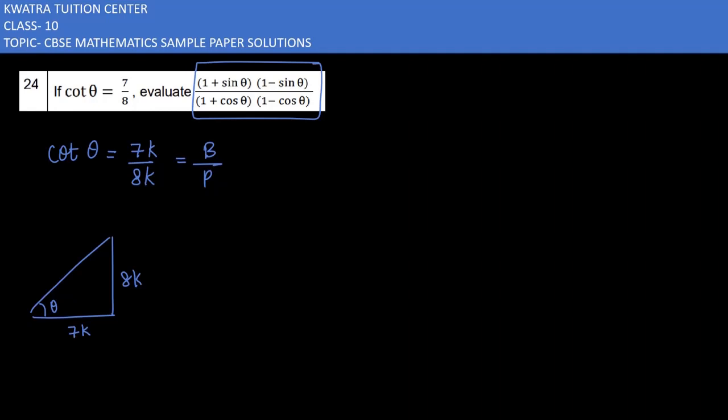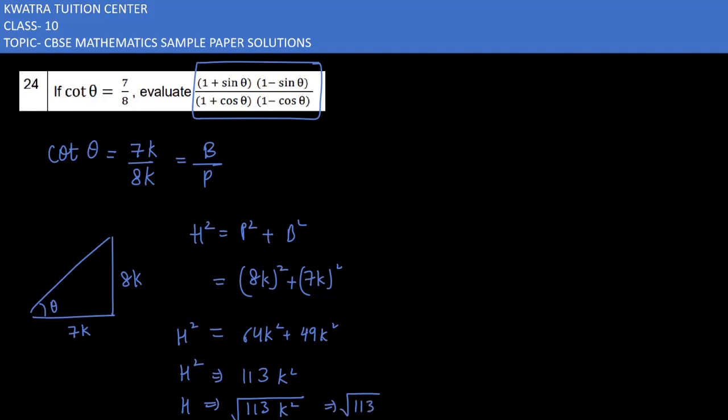Find the value of hypotenuse using the Pythagorean theorem. Hypotenuse² = perpendicular² + base². That's 8k² + 7k² = 64k² + 49k² = 113k². Taking square root, hypotenuse = √113 k.